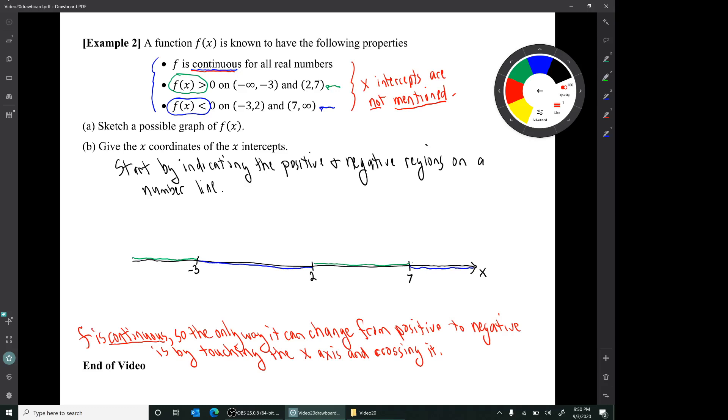So that tells us that at these numbers where the lines change from green to blue or blue to green, those are places where the graph changes from being above the axis to below the axis or from below the axis to above. So at those points, the graph has to touch the x-axis. I'm going to color those red. So those are definitely three x-intercepts. Are there any other x-intercepts? Well, no, because we're told that at all the other x values, the graph is staying above the axis or staying below the axis. So that's it for x-intercepts. For question B, the x-intercepts are x equals negative 3, 2, and 7.